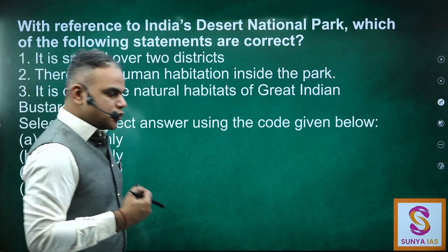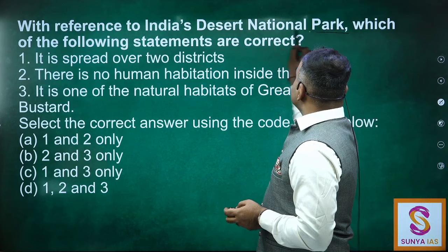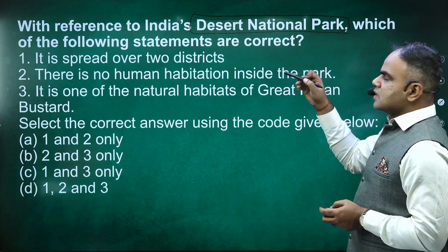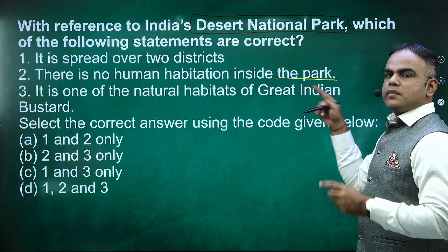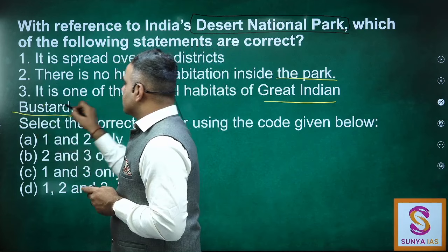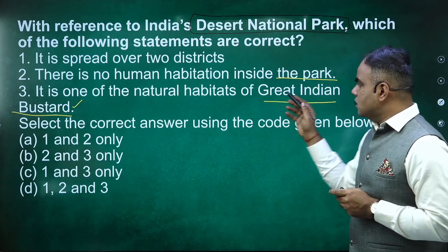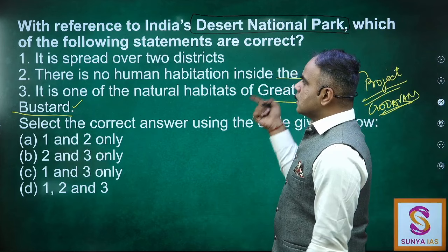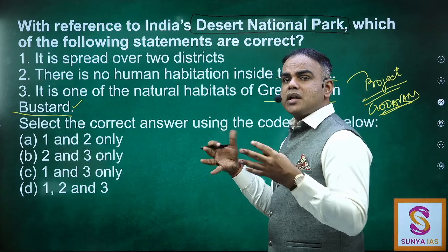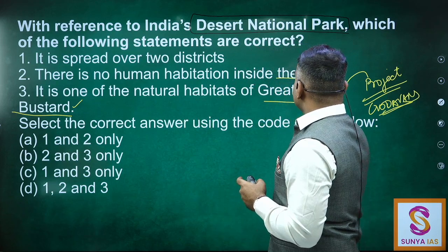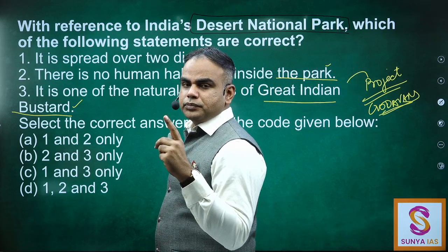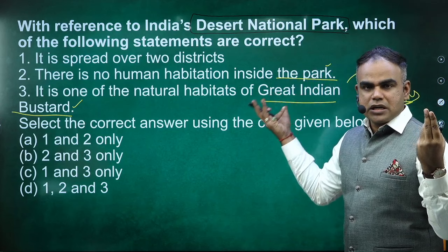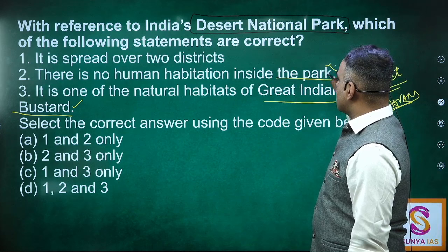The government has sanctioned rupees 50 lakhs for Jordan's Cursor conservation in Andhra Pradesh. Key things to remember about Jordan's Cursor: it is critically endangered, and it is a nocturnal bird — active during the night. Most birds are diurnal, but this one is nocturnal. Think about nocturnal birds in India: owls, nightjars, and Jordan's Cursor. It is endemic to Andhra Pradesh and Telangana, found in the Eastern Ghats of Andhra Pradesh, specifically in Srilankamaleshwar Wildlife Sanctuary.